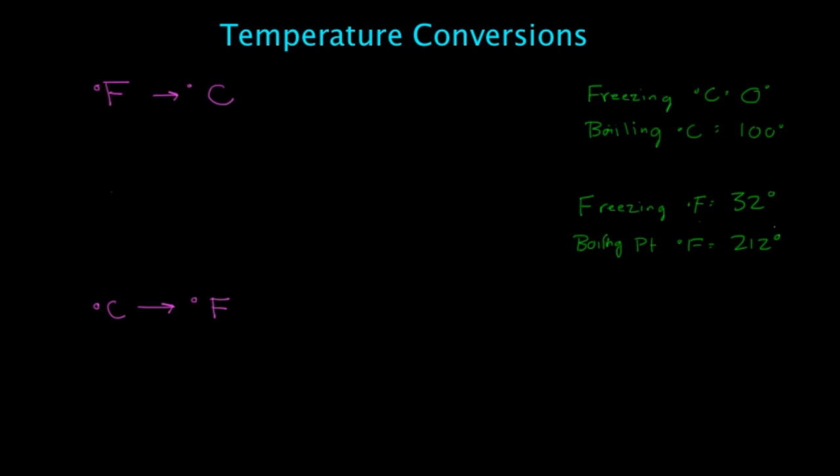So we'll go ahead and show you an equation that will show you what exactly you need to do to convert. To convert Fahrenheit to Celsius, we're going to take 5 ninths times Fahrenheit minus 32.